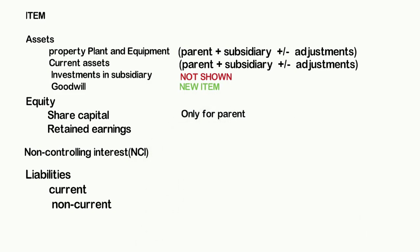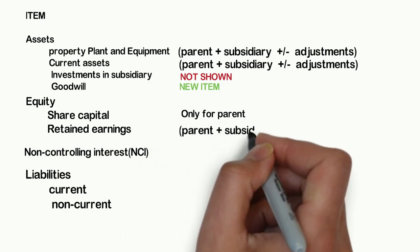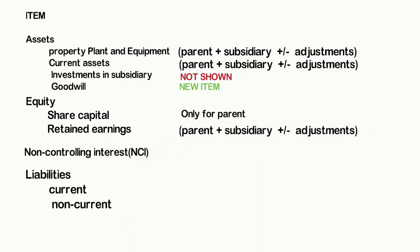Since the parent company's owners control the subsidiary company, share capital is shown only for the controlling owners. The retained earnings are now group retained earnings and represent the combined earnings of parent and subsidiary after adjustments.